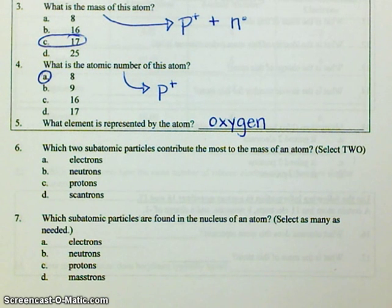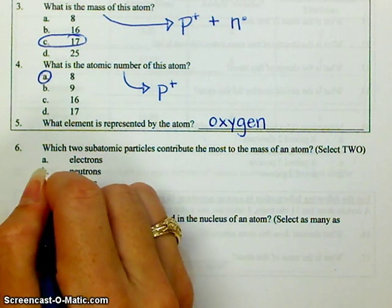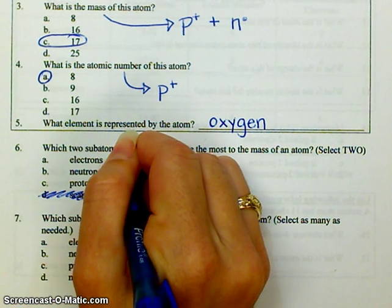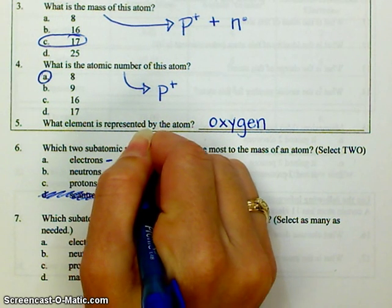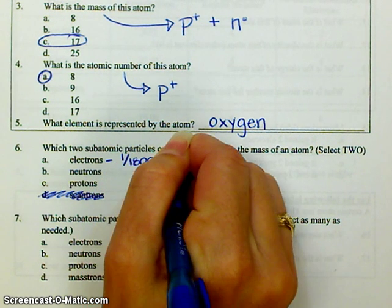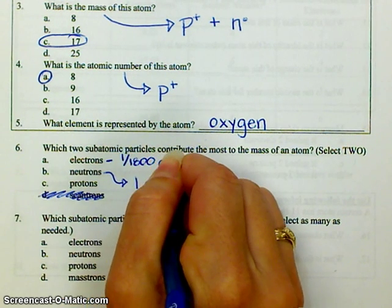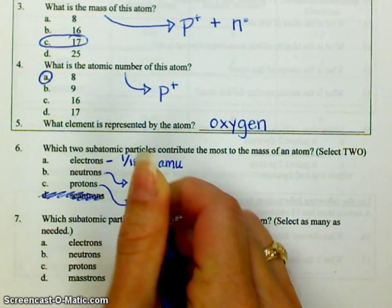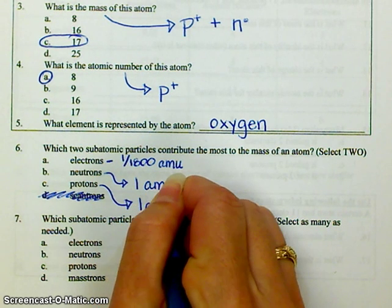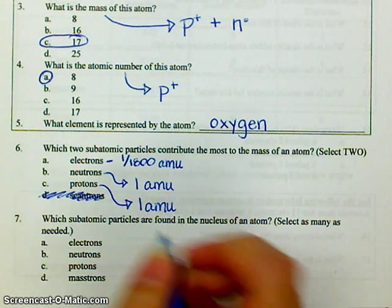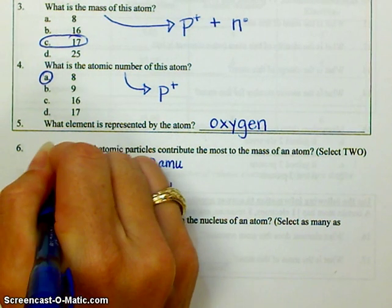Now we're on number six: which two subatomic particles contribute the most to the mass of an atom? 'Scantrons' is a crazy answer put in there to throw you off. Electrons have almost no mass — only 1/1800th of an amu. Neutrons have a mass of 1 amu and protons have a mass of 1 amu, so the answer is protons and neutrons.